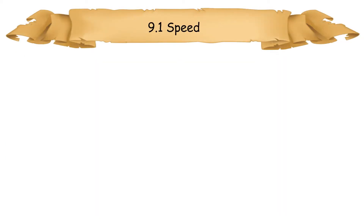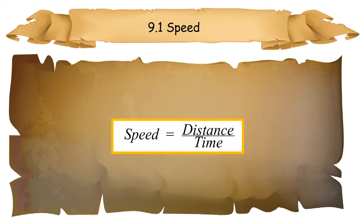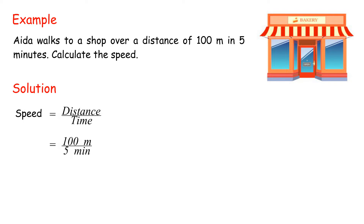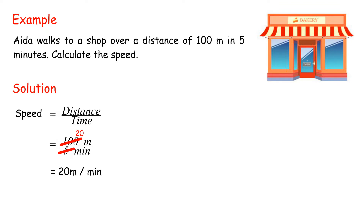9.1 Speed. Speed is a rate. Speed is measured as distance moved over time. Aida walks to a shop over a distance of 100 meters in 5 minutes. Calculate the speed. Speed equals distance over time, equals 100 meters over 5 minutes, equals 20 meters per minute.